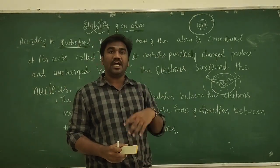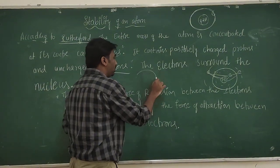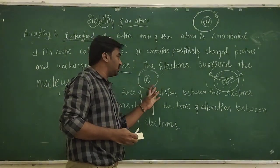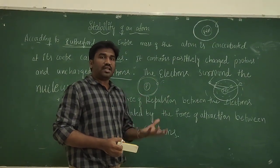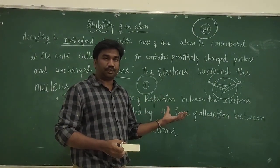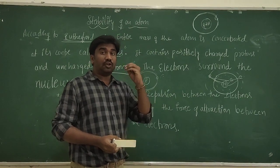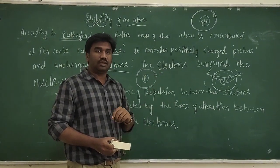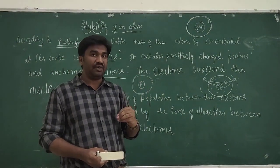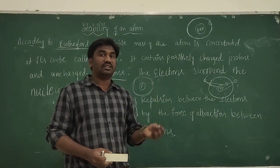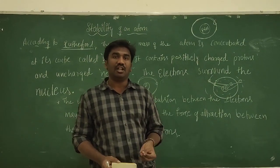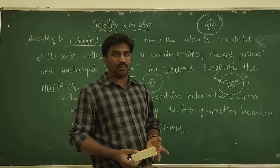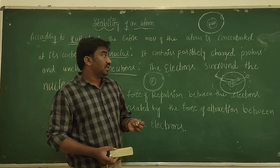However, in the hydrogen atom there is only one electron and one proton, so there are no other electrons, meaning there is no electrostatic repulsion between electrons — yet hydrogen is still stable. This means Rutherford's assumption fails. Even in the helium atom, the electrostatic force of attraction between the nucleus and electrons is 8 times greater than the repulsion between electrons, so again his assumption fails.